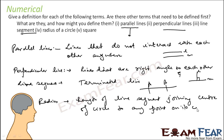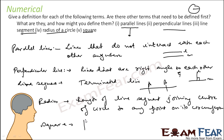The radius is the length of the line segment that joins the center of a circle to any point on the circumference. And for a square, all sides are equal in length and all angles are equal.